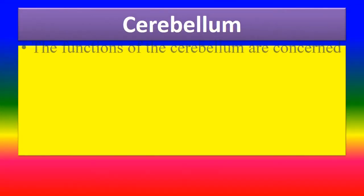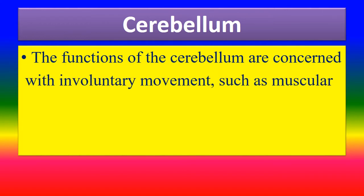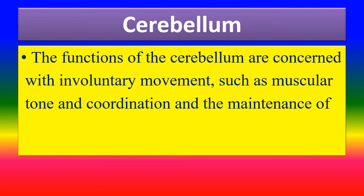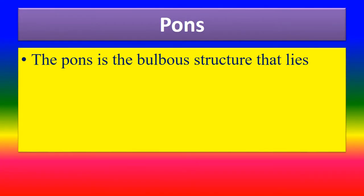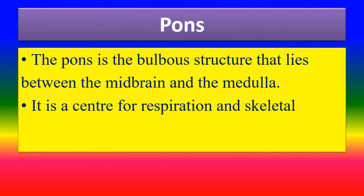The cerebellum: the functions of the cerebellum are concerned with involuntary movement such as muscular tone and coordination, and the maintenance of posture and equilibrium. The pons is the bulbous structure that lies between the midbrain and the medulla; it is a centre for respiration and skeletal muscle tone.